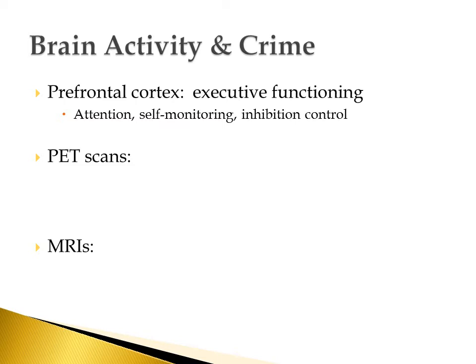For those who have ever seen a model of a brain, the prefrontal cortex is right in the front — almost right behind your forehead. Studies have been done to examine whether or not prefrontal cortex activity has anything to do with criminal activity, because if somebody has lower levels of activity in their prefrontal cortex, they might not be able to control their inhibitions as well, or see the future consequences of their actions. In other words, faulty or low activity in the prefrontal cortex might have something to do with a person committing crime.